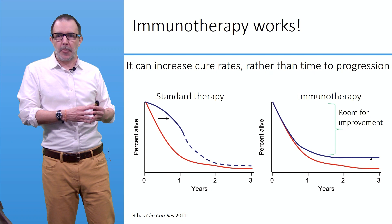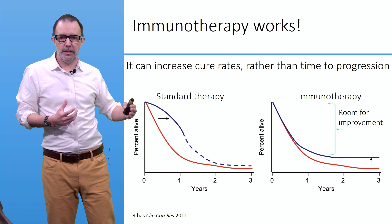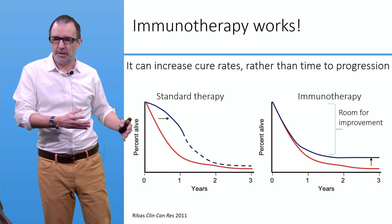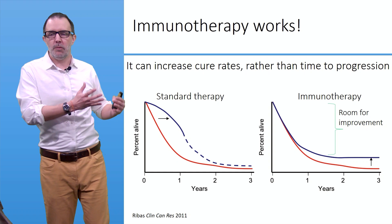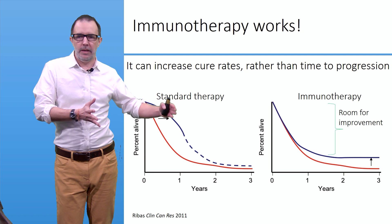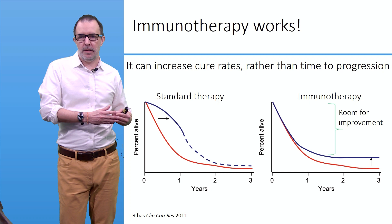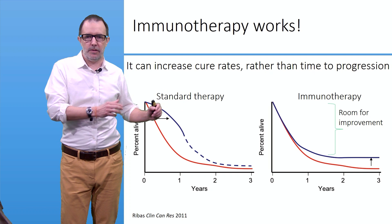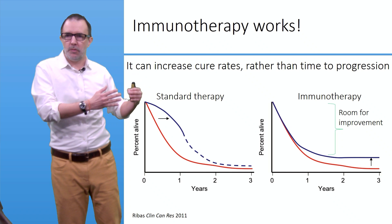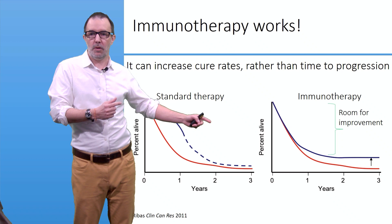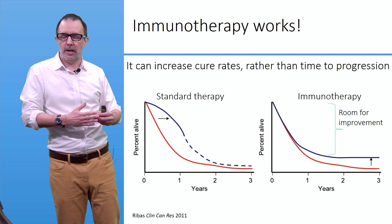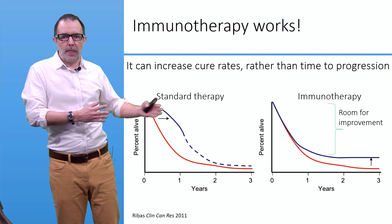Immunotherapy works. The difference from standard therapy is that with standard therapy you typically gain a short-term response, but after a few years there is relapse and the survival rate is not very different from untreated patients. With immunotherapy, the response is more delayed — it won't reduce time to progression — but it considerably increases cure rates. After a few years, a significant number of patients are still alive and did not present any relapse. The issue, however, is that only a fraction of patients respond to immunotherapy, and this is where there is a lot of room for improvement.